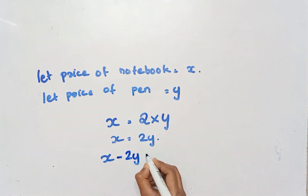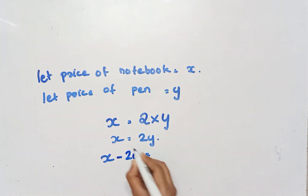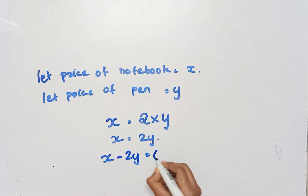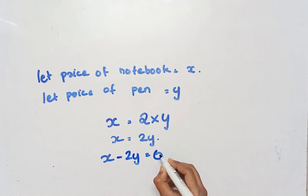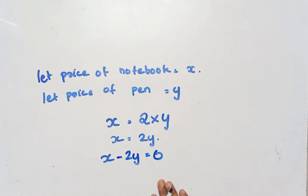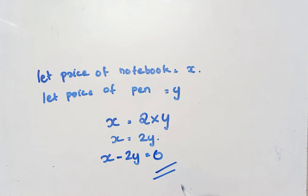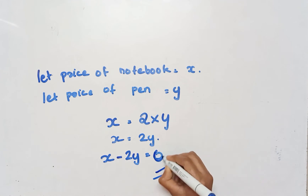So x minus 2y is equal to 0. x minus 2y equals 0. That is our linear equation representing the statement.